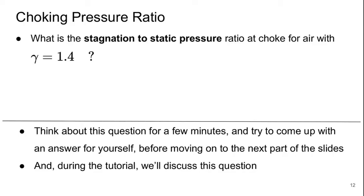Welcome back. This is Part 3 of Lecture 12 of Aerospace Propulsion. When we left off, we were going to determine what the choking pressure ratio is for air with gamma 1.4.